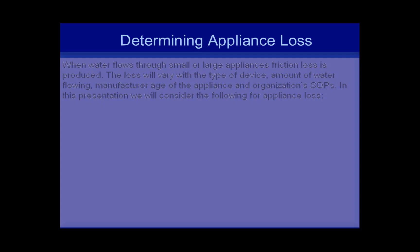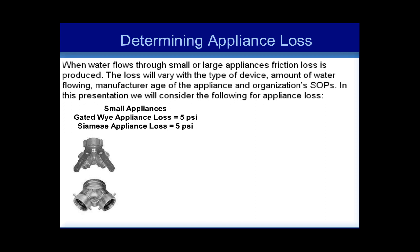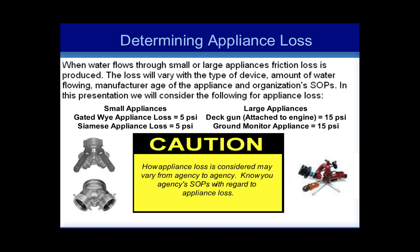Determining Appliance Loss. When water flows through small or large appliances, friction loss is produced. The loss will vary with the type of device, amount of water flowing, manufacturer, age of the appliance, and organization's SOPs. For appliance loss: small appliances — a gated Y appliance loss equals 5 PSI, and a Siamese appliance loss also equals 5 PSI. Large appliances — allow 15 PSI for a deck gun attached to the engine and 15 PSI for a ground monitor appliance. Use caution, as appliance loss considerations may vary from agency to agency.